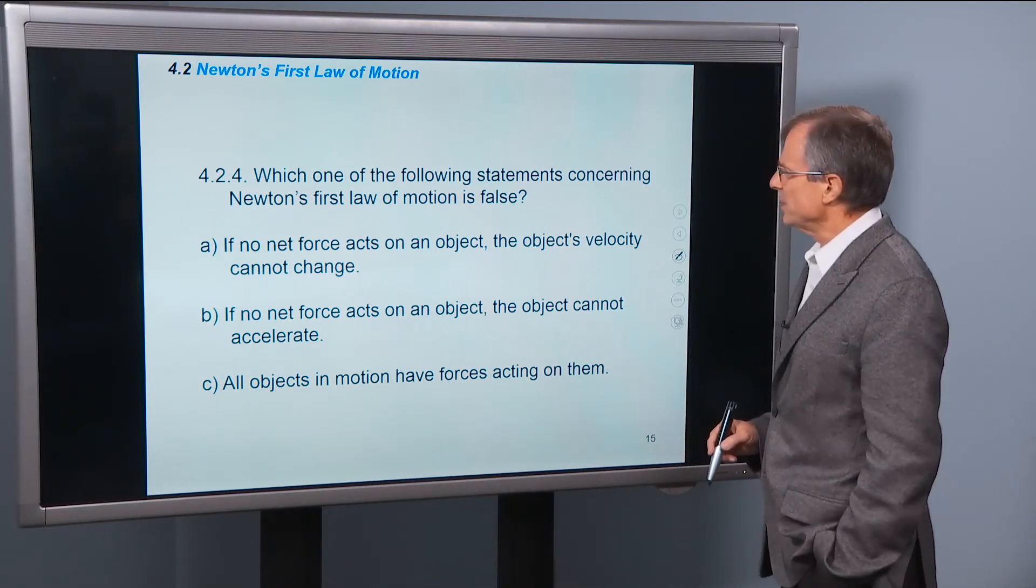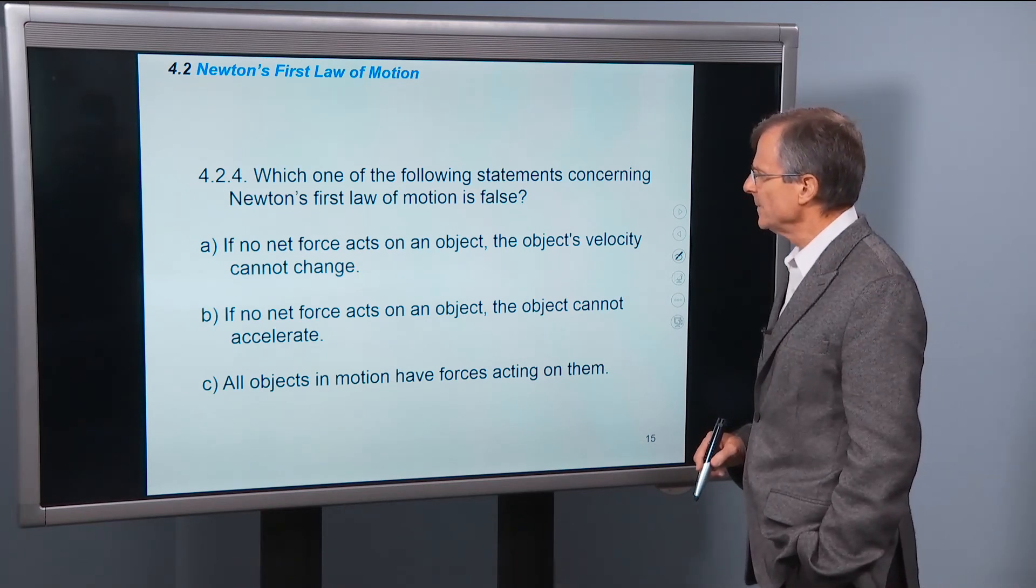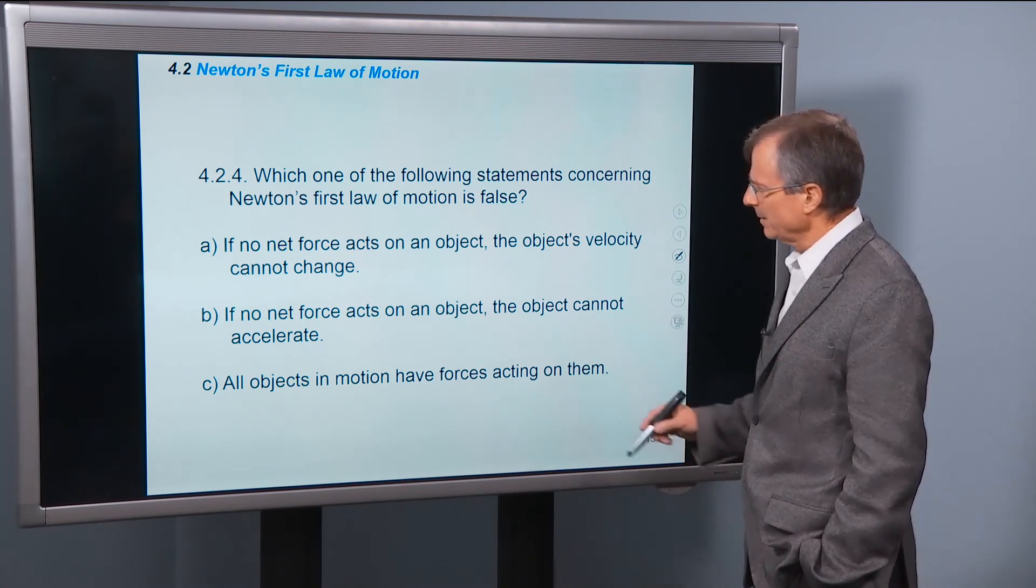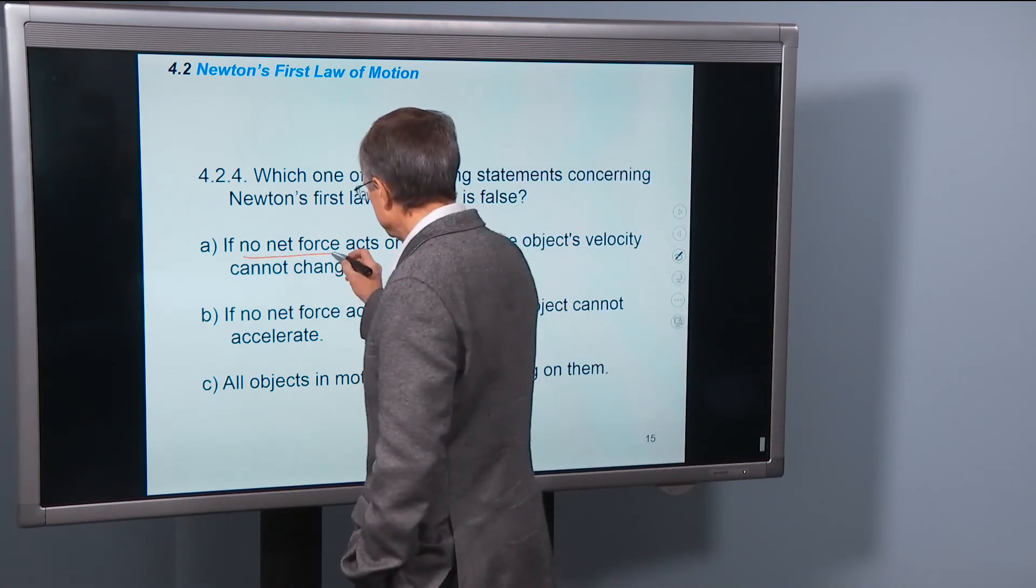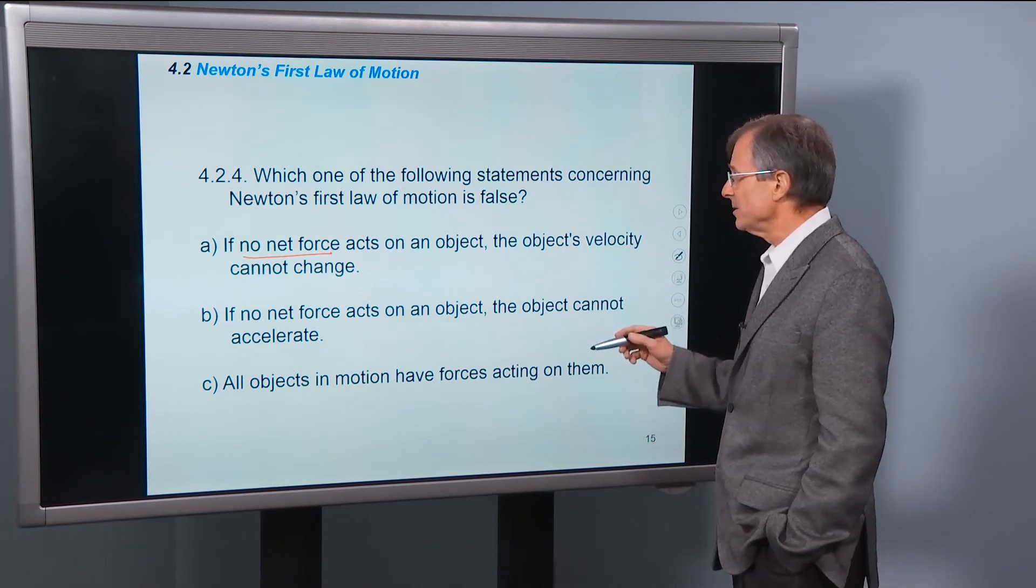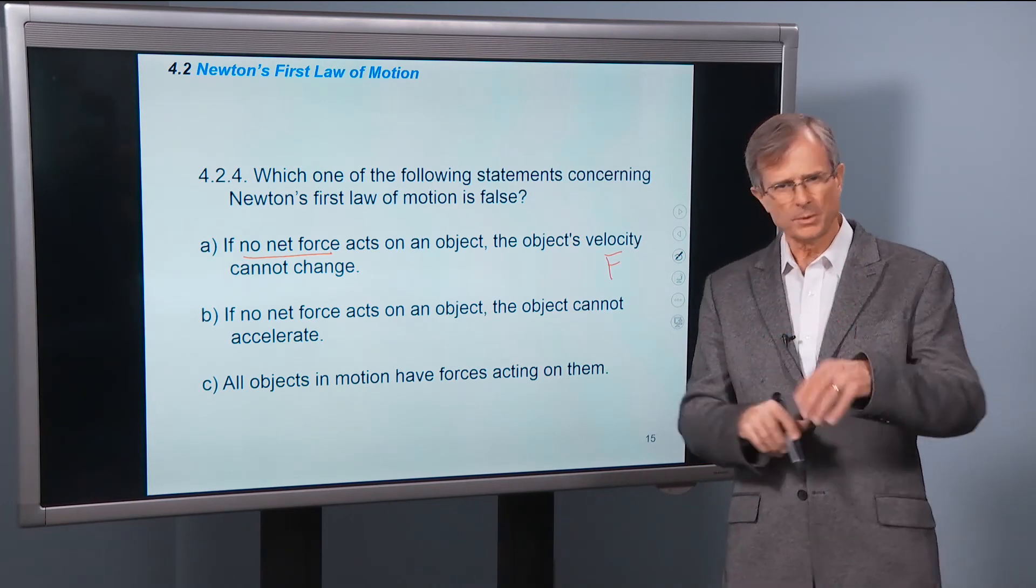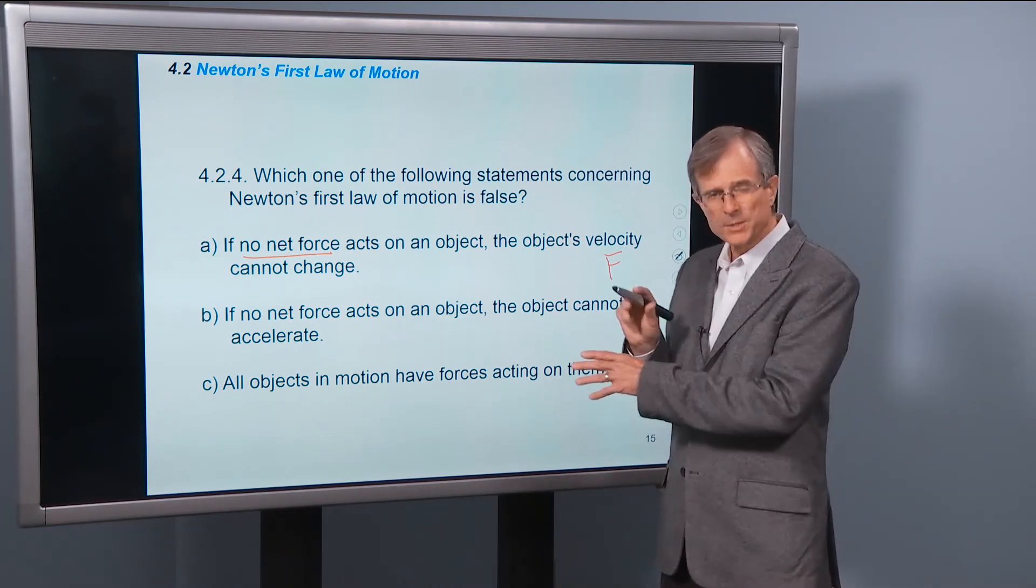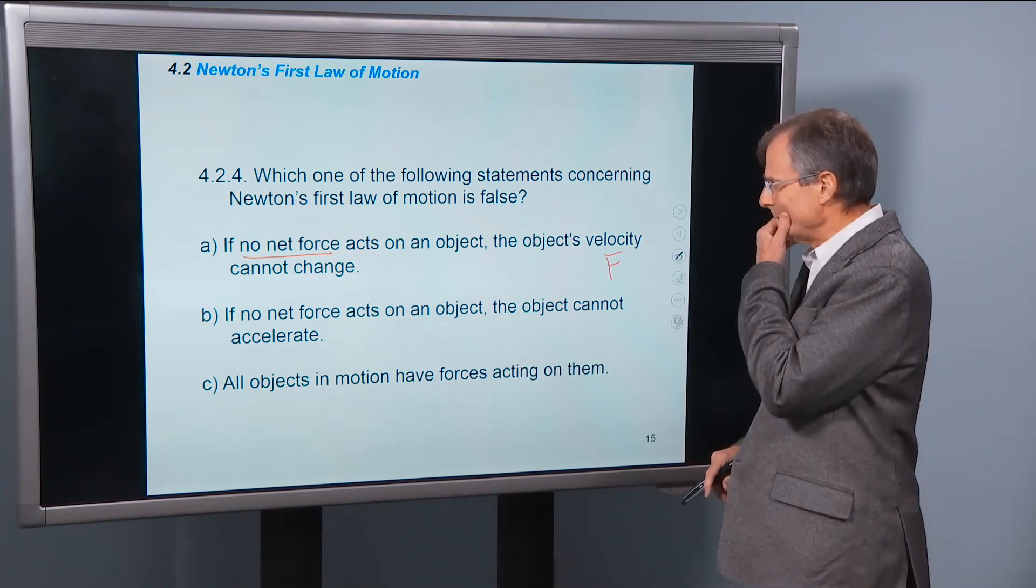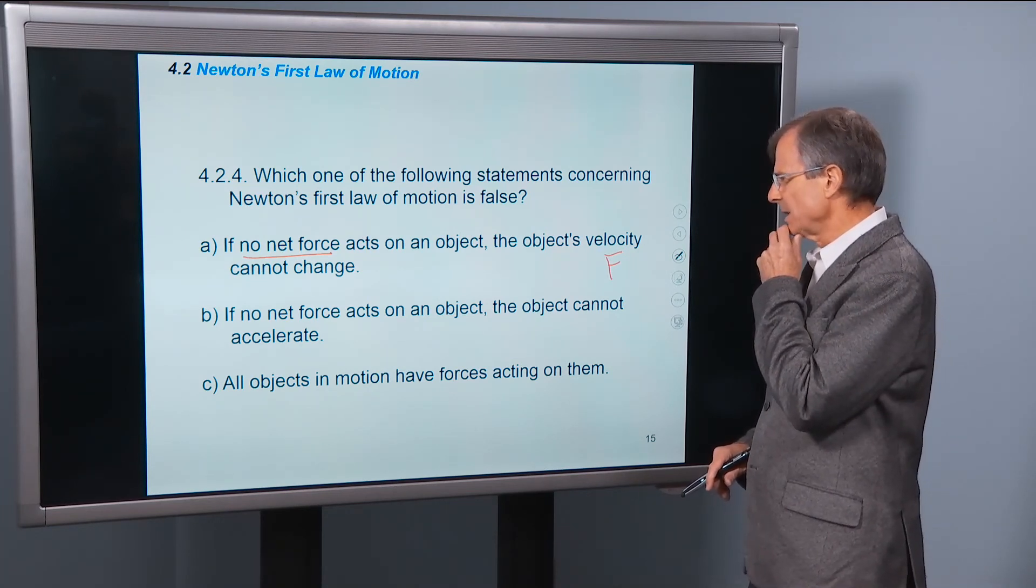Which one of the following statements concerning Newton's first law of motion is false? If no net force acts on an object, the object's velocity cannot change. Okay, we've got no net force, then the object's velocity cannot change. That's true. The object's velocity is going to be zero and stay zero or non-zero at a constant value. That's true. If no net force acts on an object, then the object cannot accelerate.